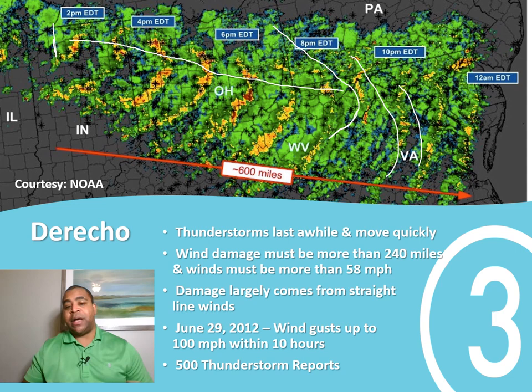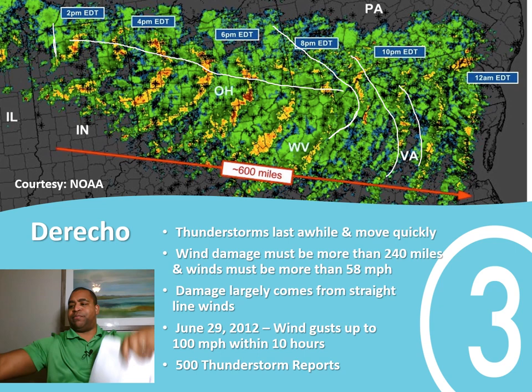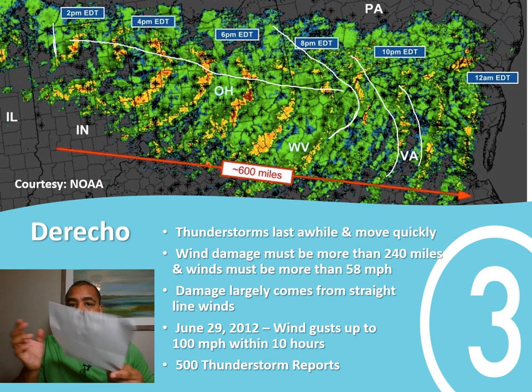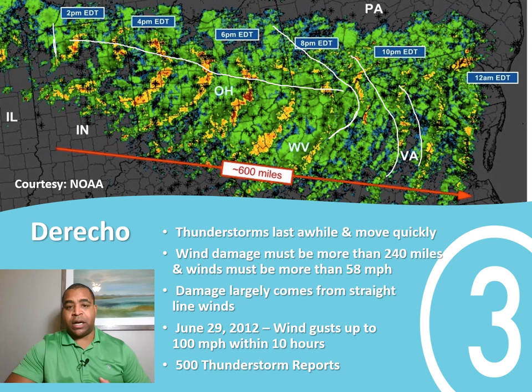The damage from that derecho was largely from those straight-line winds. Usually when people think of damage from storms, they think of tornadoes, where debris goes in all different directions in a circular pattern. But with straight-line winds, all of the damage just looks like it's been pushed in one forward direction. On that particular day, I experienced that firsthand — the sky went from sunny to very cloudy to very dark, and the winds were absolutely insane.